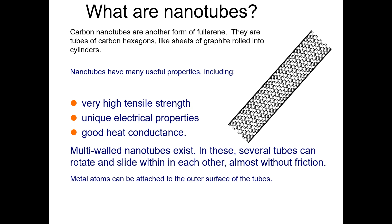What we can do with these nanotubes is change or enhance their properties. Metal atoms can be attached to the outer surfaces of the tube - this is something like functionalization of the nanotubes, similar to the concept of doping. We want to enhance the properties for a particular application, so we attach or adopt metal atoms to the surface of the tubes.